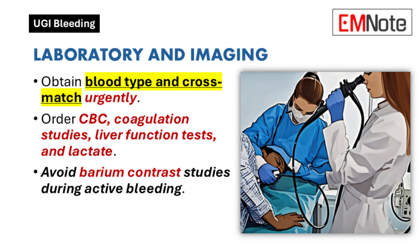In patients with significant bleeding, blood type and cross-matching are critical. Additional tests include complete blood count, coagulation studies, liver function tests, and lactate levels, which can indicate illness severity. Electrocardiography is necessary for patients with coronary artery disease, and elevated lactate levels predict in-hospital mortality. Imaging studies, including barium contrast, are contraindicated in active bleeding.